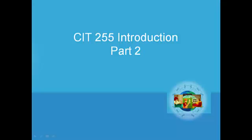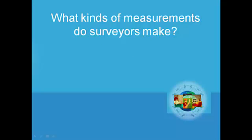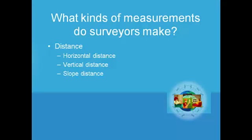This is the continuation of our CIT 255 introduction, part two. What kind of measurements do surveyors make? Let's first talk about distance measurements. Horizontal and vertical directions are perpendicular to each other, and a slope distance can be broken down into a horizontal and a vertical distance if that slope distance falls in the vertical plane. So that's the three types of distances we're going to measure: horizontal distances, vertical distances, and slope distances.